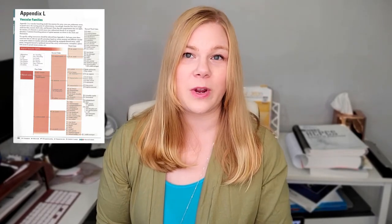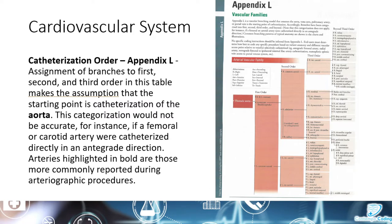When it comes to coding those catheterizations, you're going to want to get familiar with Appendix L in your CPT book, because that is where they list all of the vascular families. Appendix L has the assignment of branches to first, second, and third order in the table, and it makes the assumption that the starting point is catheterization of the aorta. This categorization would not be accurate if a femoral or carotid artery were catheterized directly in an antegrade direction.